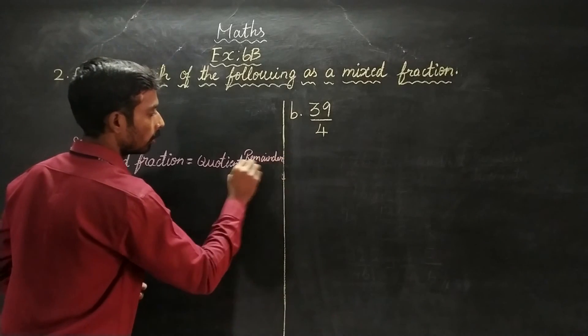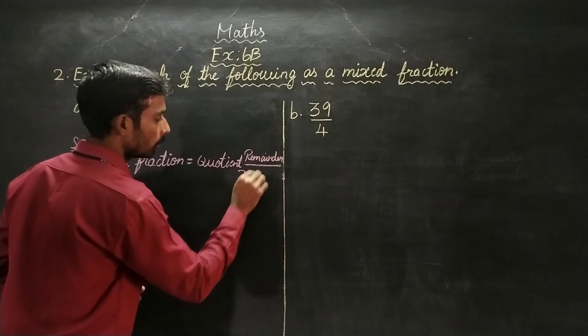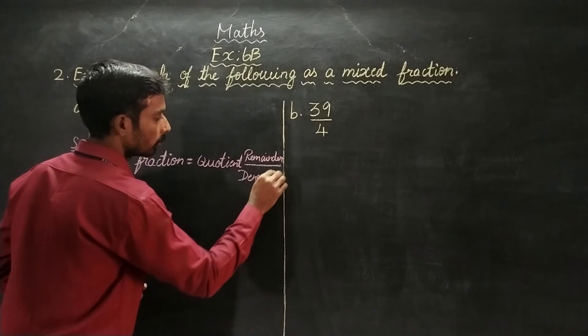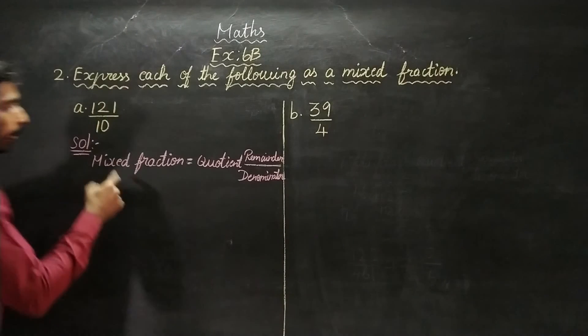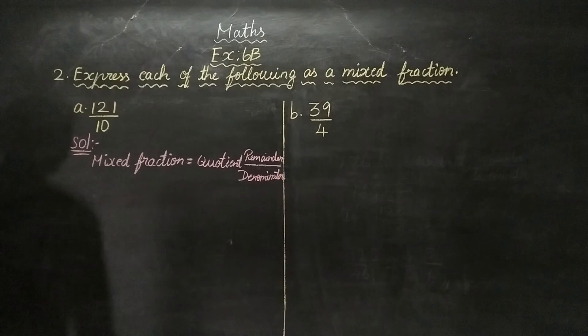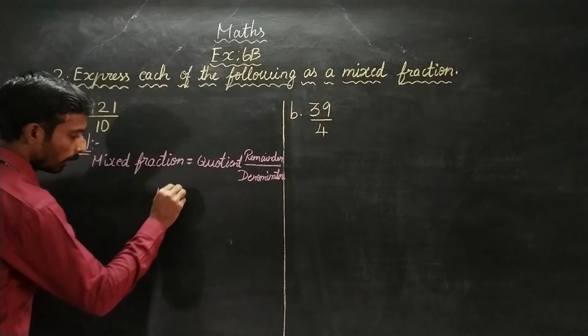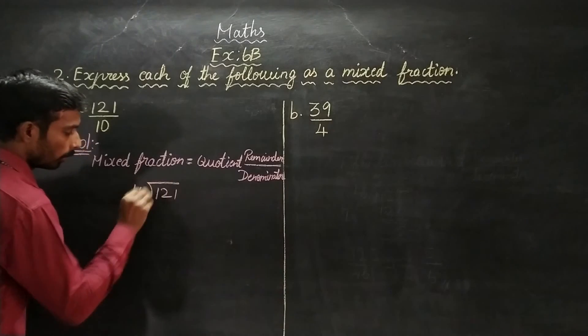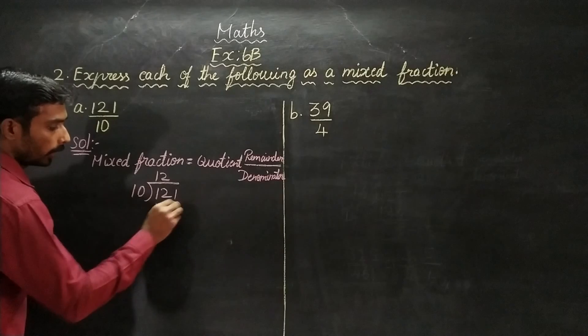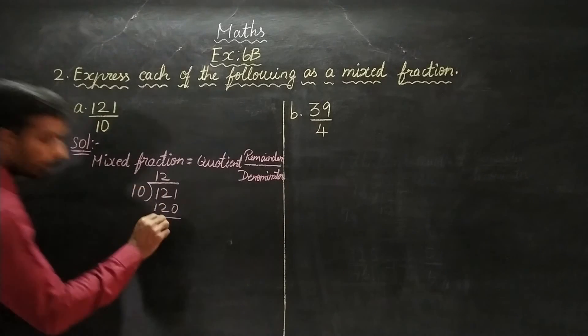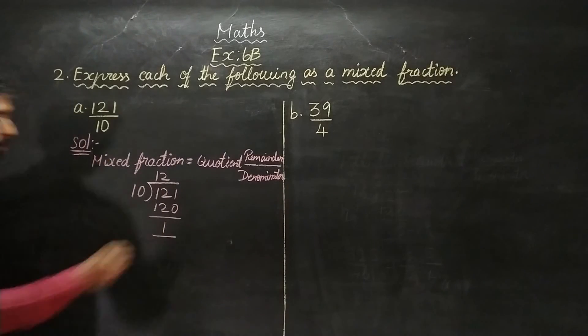Remainder by denominator. So we have 121, so we have 10 division. 121 divided by 10: 10 goes into 12 once, giving 120, so minus, this gives remainder 1.